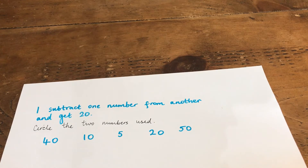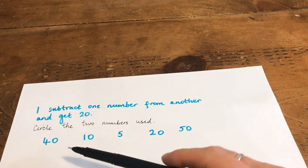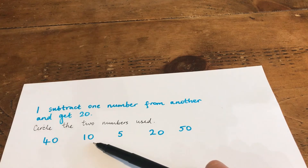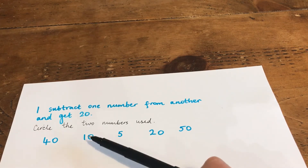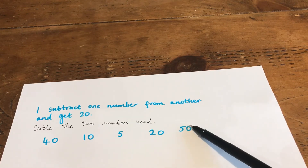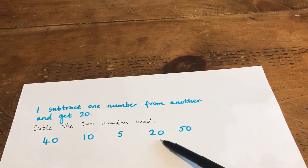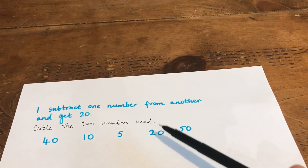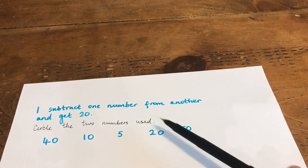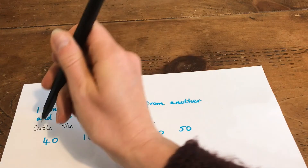Let's look at a couple of examples. If I took 40 take away 10, that gives me 30 — so that's not the answer. I couldn't do 10 take away 20 because we always start with the biggest number. I could do 50 take away 20, that'd be 30. But you've probably worked out that 40 take away 20 gives you 20 — so those two numbers have a difference of 20.